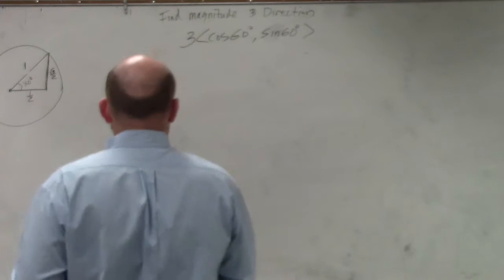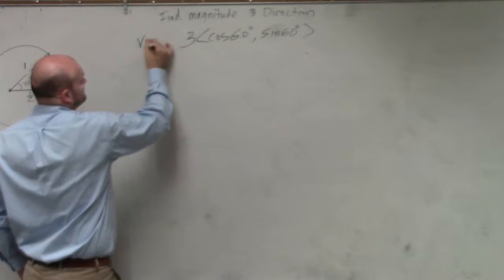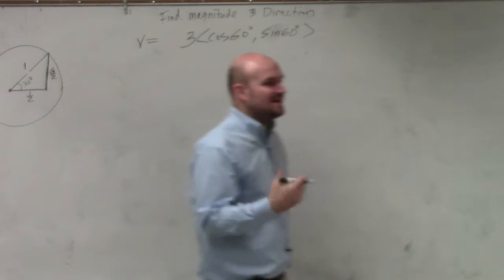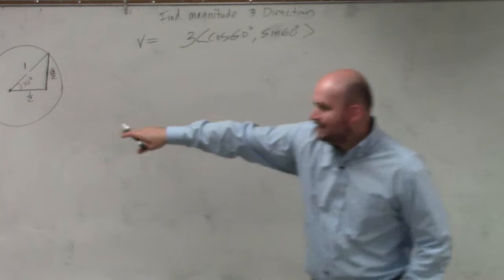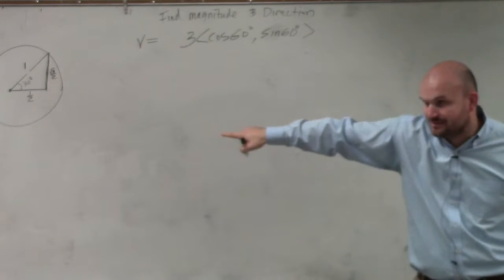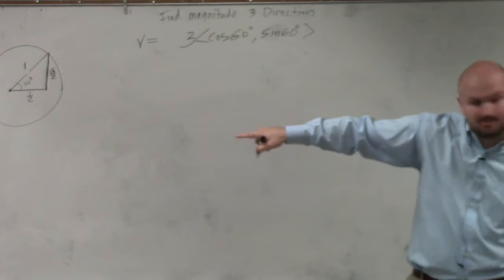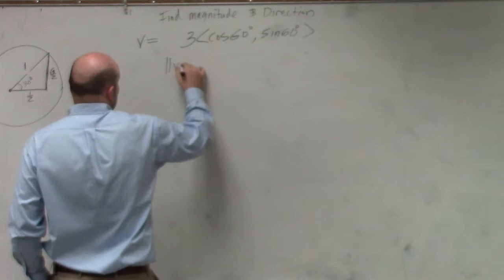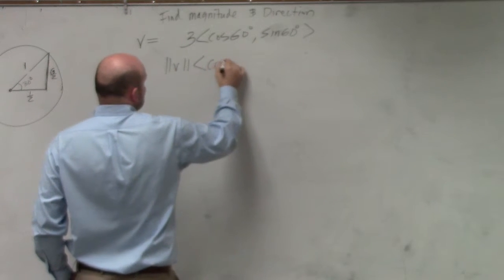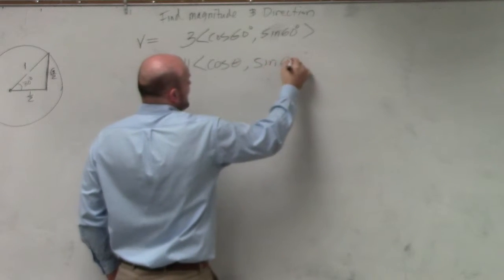I'll go over the answer. Guys, if we're saying this is our vector v, if we're looking at the direction and magnitude — look over there — it looks so much more confusing, but in reality, all this is is the magnitude of vector v times the cosine of your angle, sine of your angle.